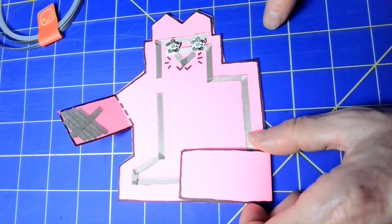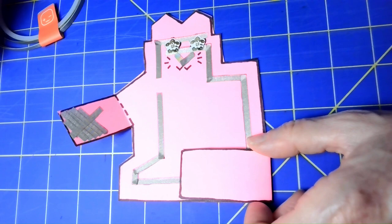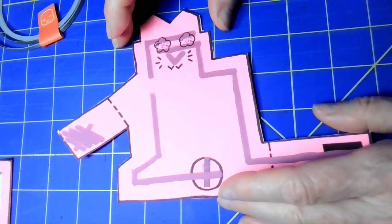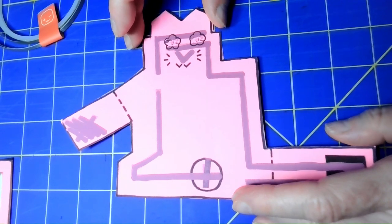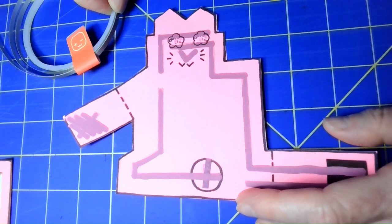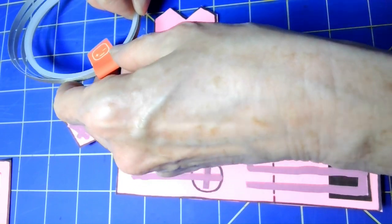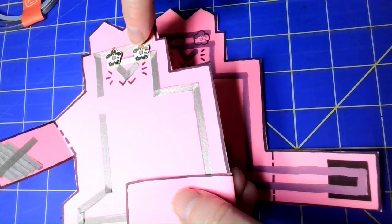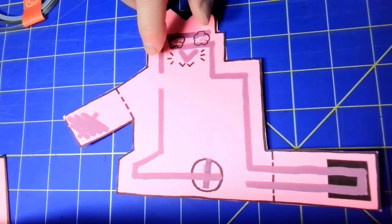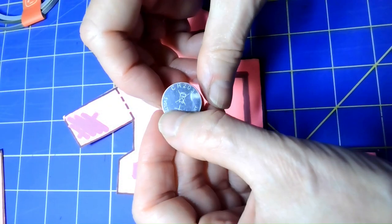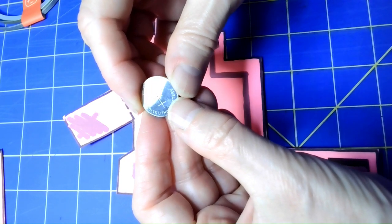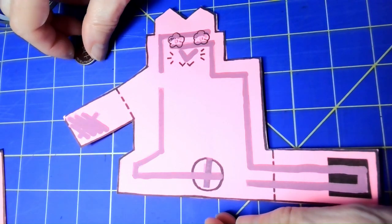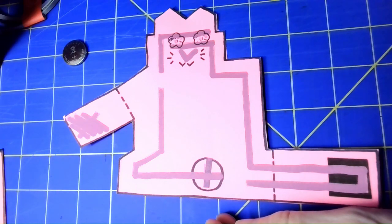What you need for this project is a paper template you can print out on cardstock any color you like, some Chibitronic fabric conductive tape, the color changing circuit stickers, and a 2032 battery.